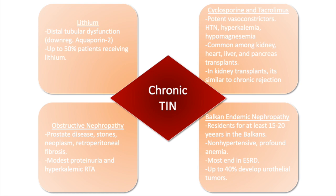Lithium nephropathy causes distal tubular dysfunction via downregulation of aquaporin-2, and this happens in up to 50% of patients receiving chronic lithium therapy. Cyclosporine and tacrolimus are known to be potent vasoconstrictors that eventually cause hypertension, hypokalemia, and hypomagnesemia. Nephropathy is common among kidney, heart, liver, and pancreas transplants. Obstructive nephropathy is related to prostatic disease in older males, kidney stones, and neoplasms, and presents with modest proteinuria and hyperkalemic RTA. Balkan endemic nephropathy is commonly found in people who have lived at least 15–20 years in the Balkans; they are usually not hypertensive but have profound anemia, and most end in end-stage renal disease with up to 40% developing urothelial tumors.